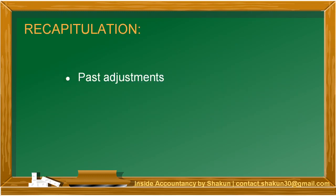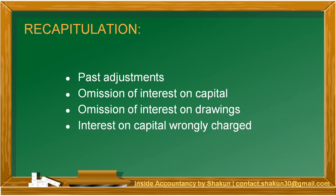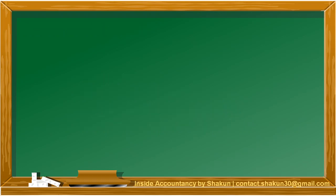Let's recapitulate. In this video we have talked about past adjustments — the errors and omissions which are made after preparation of the partnership accounts. We covered omission of interest on capital and its treatment with an example, omission of interest on drawings which is opposite in treatment to interest on capital, and interest on capital that is wrongly charged. I hope the concepts were clear. If you liked the content, please like the video and subscribe to the channel.